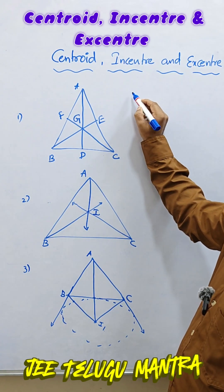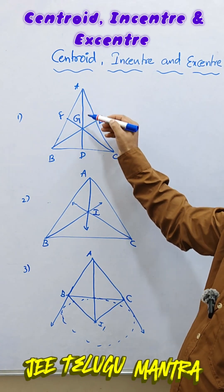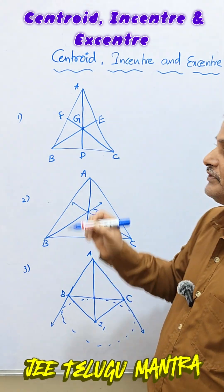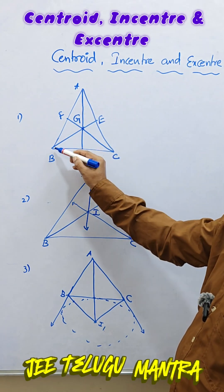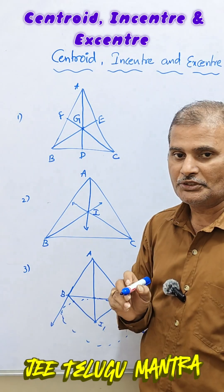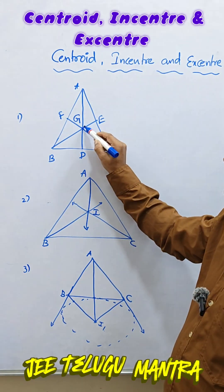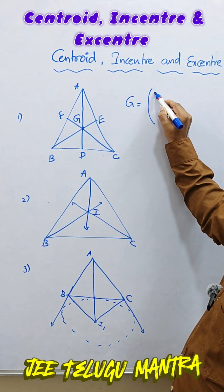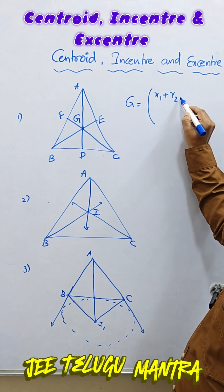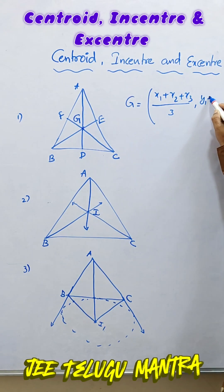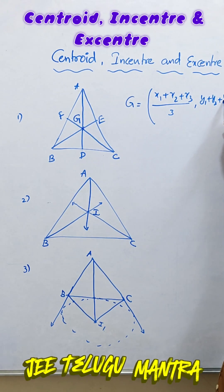Centroid means the point of concurrence of medians is called centroid. Here AD and BE and CF are the medians of the triangle ABC. Here G is a centroid of ABC. The formula for the centroid is equal to (x1 + x2 + x3)/3, (y1 + y2 + y3)/3.